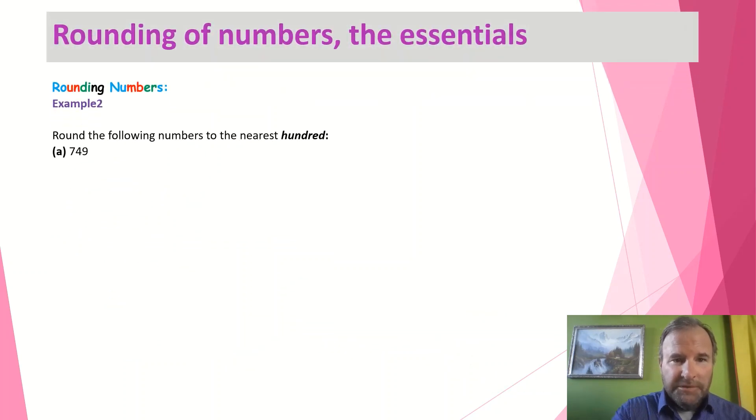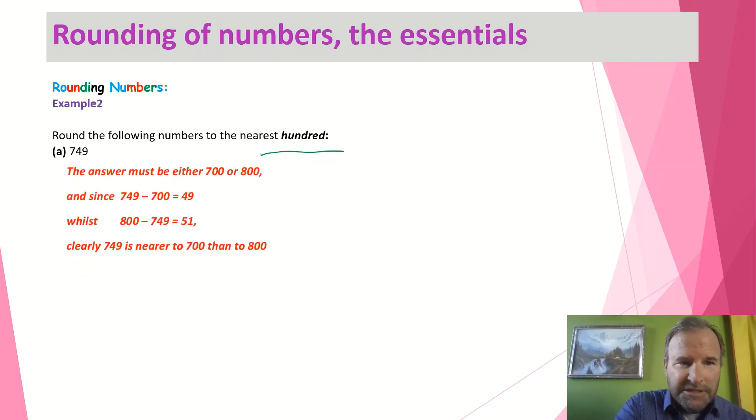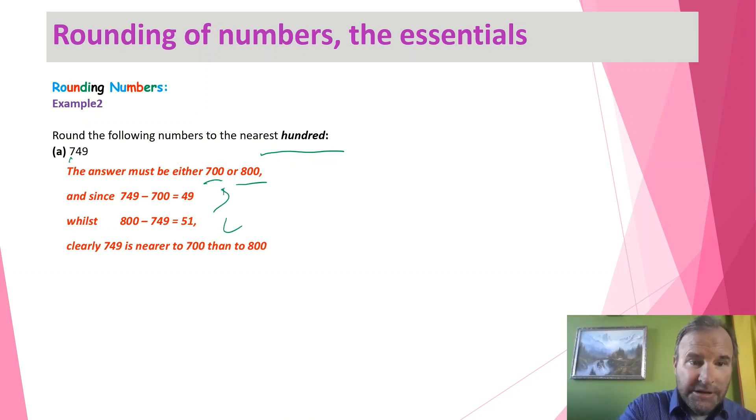Here is the next one. We've got to the nearest hundred, 749. Again, going through the same sort of thinking. Once you get a bit better you can avoid doing that, maybe go straight to the number line, or maybe even do it in your head, and you'll be going really well if you can do it in your head. Okay, here we go. So the number must be between, because this 7 here means 700, between 700 and 800. Then we do a little quick calculation. Between 749 and 700, that's a smaller number here, and that's the larger number there. So clearly 749 is closer to 700 than 800.